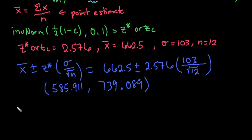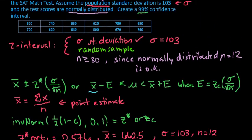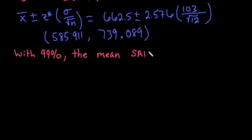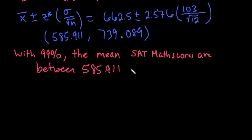So to recap, to interpret your answer for this, we can say with 99% confidence, and then you always insert the context of the problem. So we can say the mean SAT math scores are between 585.911 and 739.089. When you're interpreting, you always tell your level of confidence and you always put the context or the problem that you're dealing with.